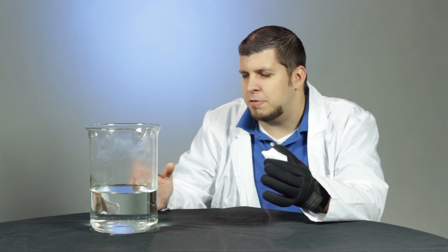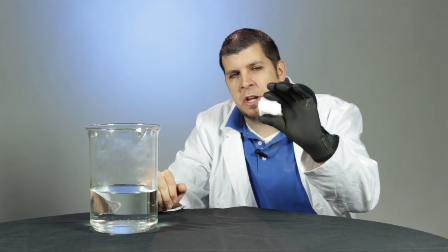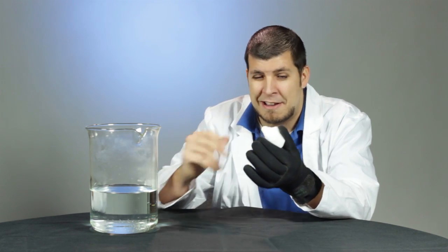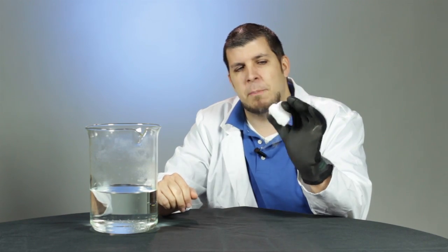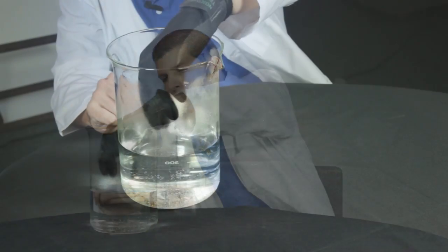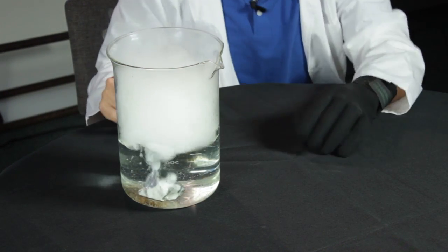What I would like you to do is observe what's happening. Right now you can see a little bit of fog coming off the dry ice because of the room temperature versus the negative 110 degrees below zero temperature of this ice. When I place it in there, immediately you're going to see a very quick reaction.